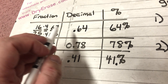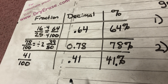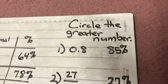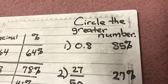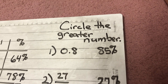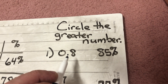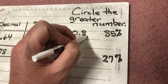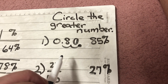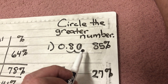That's the first part of your assignment — you'll be given a table with either the fraction, the decimal, or the percent, and you have to fill in the other two equivalent forms. The second part says 'circle the greater number.' You'll get some combination — decimal and percent, fraction and percent, decimal and fraction — and you have to change one to match the other so you can compare them. For example: eight-tenths and 85 percent. I'll turn the decimal into a percent by moving it two places to the right, giving me 80 percent.